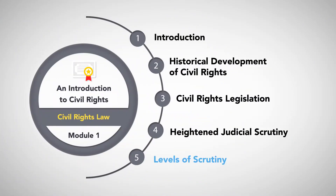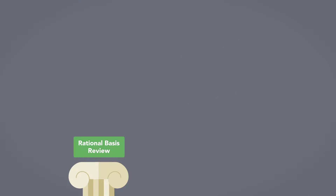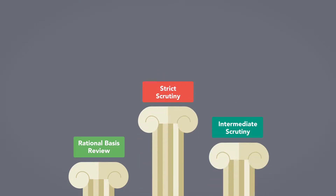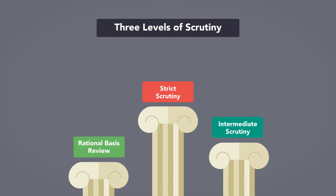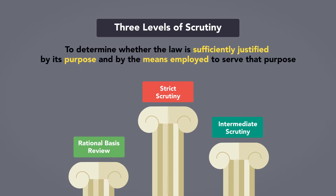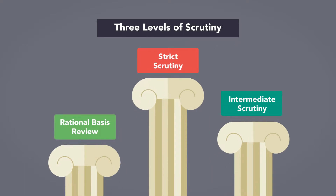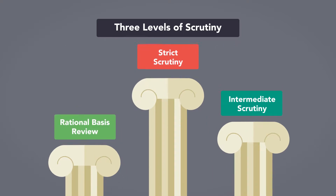Levels of scrutiny. Relying on footnote 4's rationale, the Supreme Court has developed a framework for scrutinizing all laws alleged to violate civil rights. The Supreme Court employs three levels of scrutiny to determine whether a law is sufficiently justified by its purpose and by the means employed to serve that purpose. The level of scrutiny is determined by how inherently suspicious the law is. The three levels are rational basis review, intermediate or medium scrutiny, and strict scrutiny.